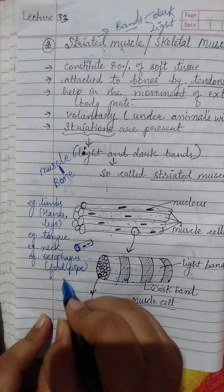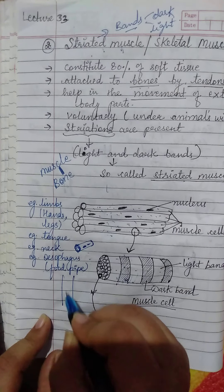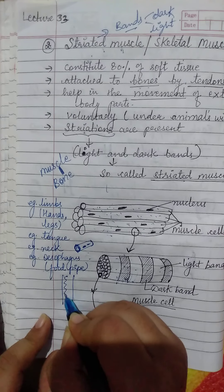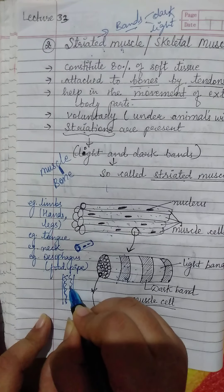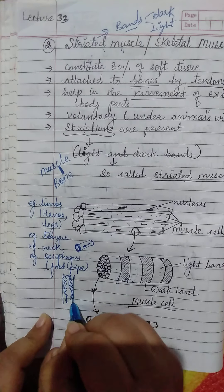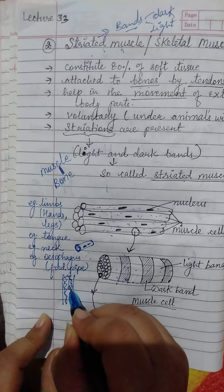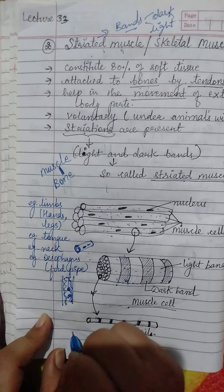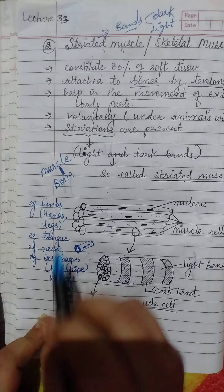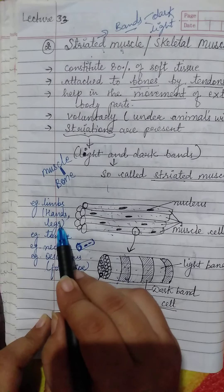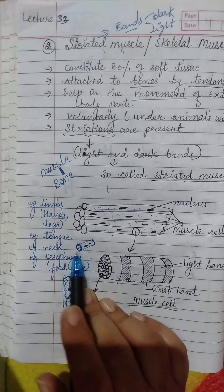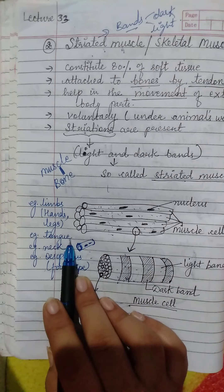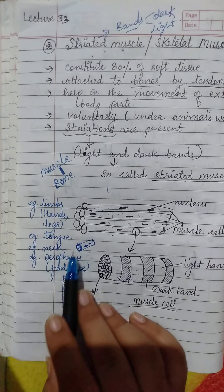Like the esophagus — the food pipe — it has a wavy movement of the muscles, through which food travels to the stomach. In the hands or legs, you can observe the movement. And in the tongue, you can also observe the movement.